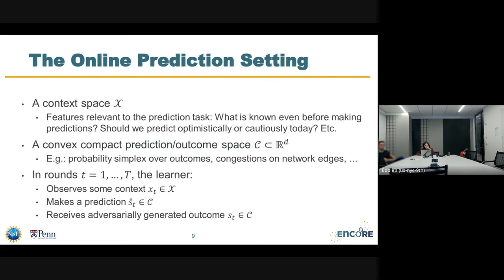Our setting is pretty standard in the online prediction setting. There's a context space of unspecified nature, and a convex compact space of possible outcomes or predictions for the state, which we call C — this is where our states and predictions will live. In rounds one through T, the learner observes some context if available, makes a prediction ŝ_t for the state in round t, and then the adversary reports back the actual realized state. So it's an online adversarial setting.